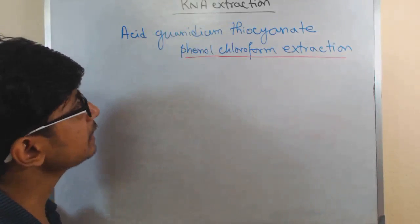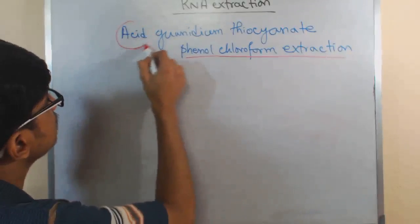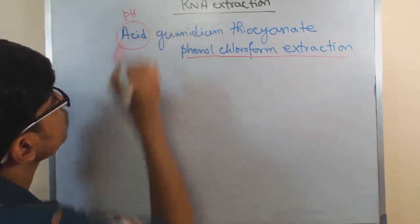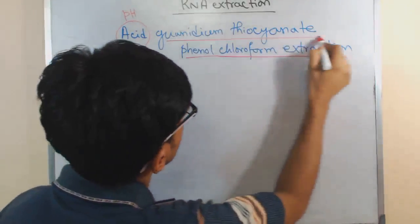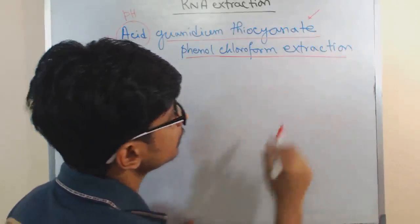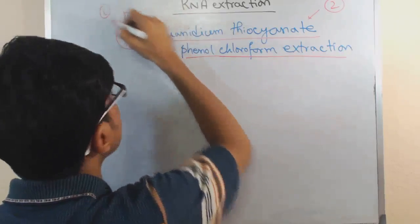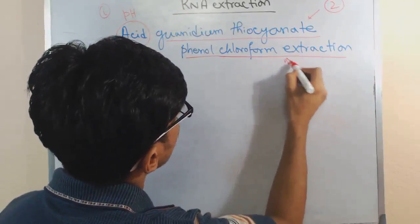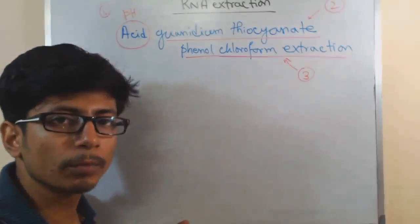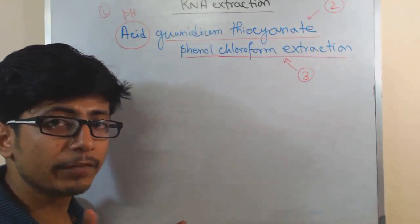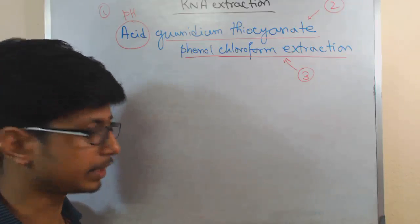Here you can see three different things. One is acid — that means pH. The second is guanidium thiocyanate. The third is phenol chloroform. These are the three components which are very, very important for RNA extraction in the conventional method.